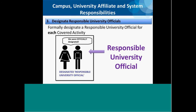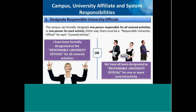Number three: designate responsible university officials. Each campus, university affiliate, and system administration must designate a responsible university official for each covered activity. The responsible university official — and of course there may be more than one — is an official designation and is clearly identified. The designation of responsible university officials may be made in various ways, and each covered activity must have a designated official.